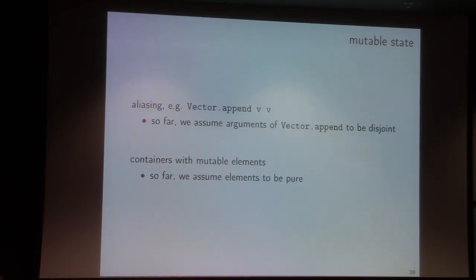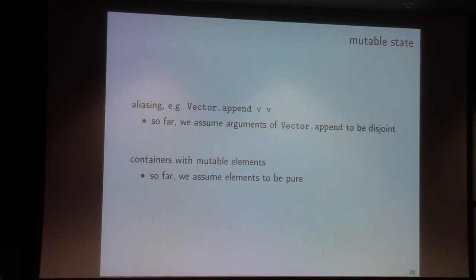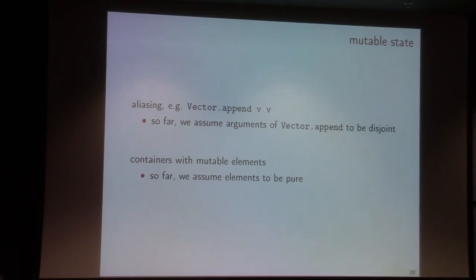Now that I've shown the challenges we've faced and the solutions we have, mutable state is actually a problem for us, or at least gives us some interesting challenges. For instance, if we have an append function in our vector module, what happens if we pass the same argument twice — two arguments that are actually the same structure? For now, we assume these two to be distinct resizable arrays. Another issue is containers where the actual elements are mutable; for now we keep with pure analysis. These are current limitations, but it's part of our research program to investigate and relax these conditions in the future.